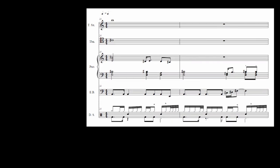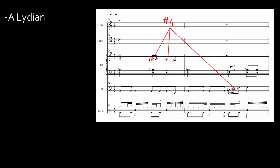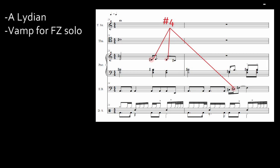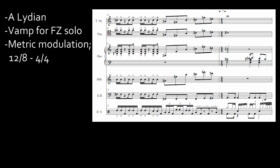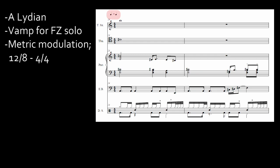This section is just a vamp based on the tonic of A Lydian. This is invariably used as a backdrop for a guitar solo. It marks the first metric modulation. This section moves from 12/8 to 4/4, which is notated as a dotted eighth note equals quarter note. This section continues until Zappa ends his solo and signals a transition into the secondary theme.